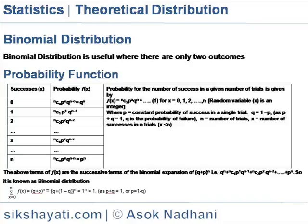Probability for the number of success in a given number of trials is given by f(x) = nCx, p^x, q^(n-x) for x = 0, 1, 2, up to n.